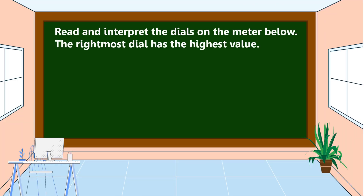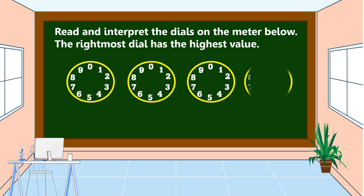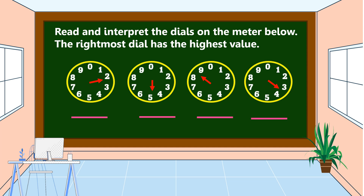Read and interpret the dials on the water meter below. The rightmost dial has the highest value. We're going to read from the rightmost dial. The arrow is in between three and four. Since the arrow is between two numbers, we record the lower number, so the answer is three.